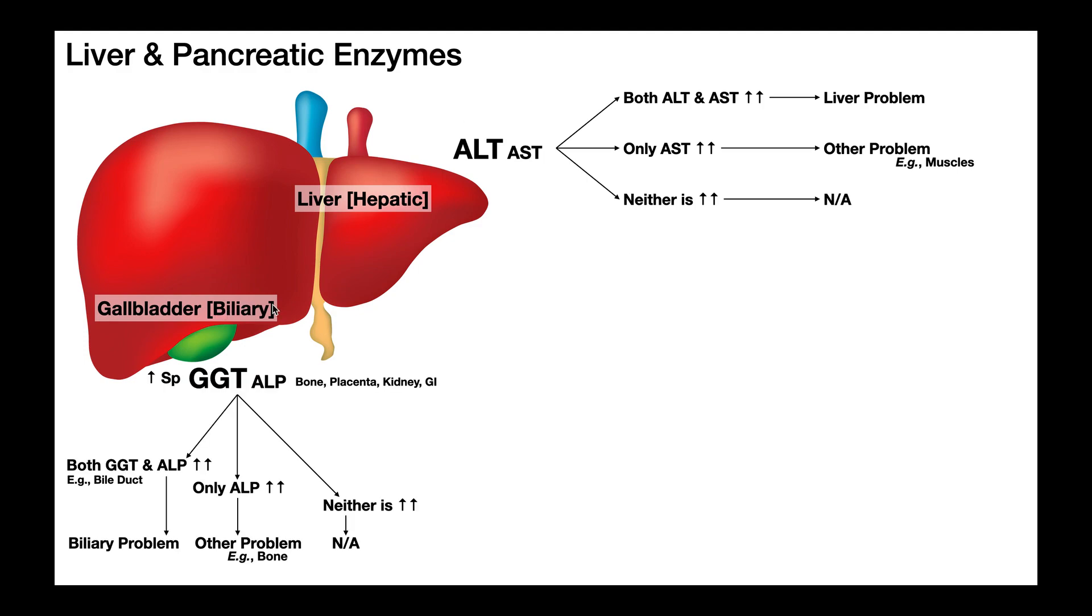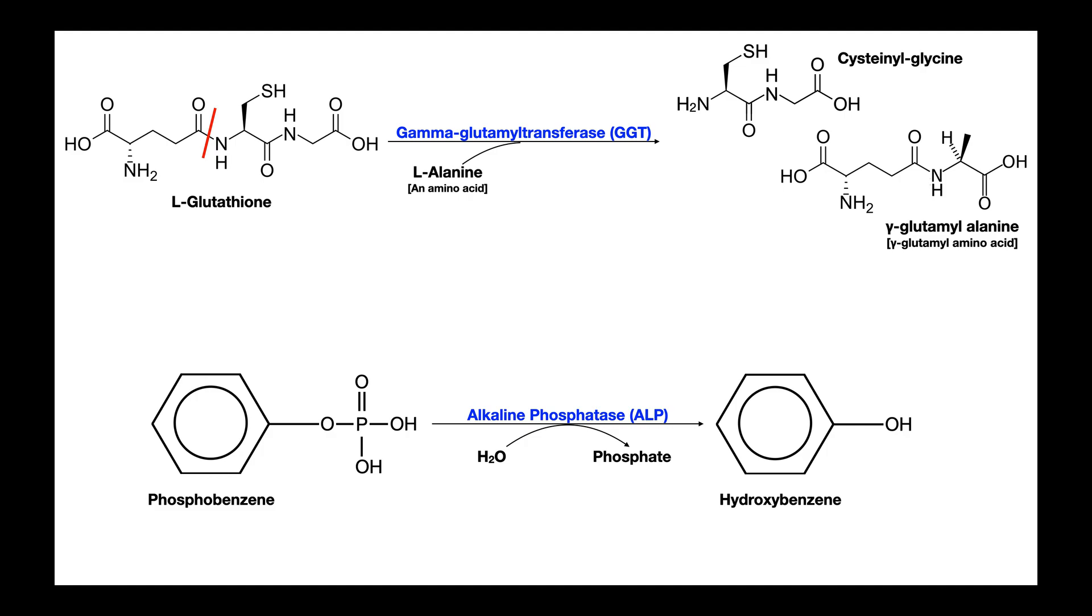So now let's take a look at the biliary system. This involves the gallbladder, the bile duct, and so on and so forth. Like the liver up here, there are two major enzymes associated with it. We have GGT, which is gamma glutamyl transferase. You can already see that this one is the one that's more specific to the biliary system. And then we have ALP, which is alkaline phosphatase. We'll come back to those in a minute, but let's understand what these enzymes actually do.